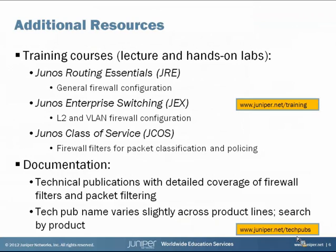That's an overview of the basics of firewall filtering on Junos-based devices. There are several additional resources if you'd like more information. The first is a set of training courses — lecture and hands-on based. The first is called Junos Routing Essentials, which includes general firewall configuration. Another course covering layer 2 and VLAN-specific firewall configuration is the Junos Enterprise Switching course. If you want firewall filters for class of service purposes like packet classification and policing, check out the Junos Class of Service course. For documentation, go to juniper.net/techpubs and search for your particular product to find the firewall filtering documentation.